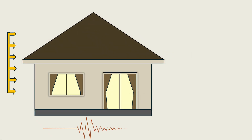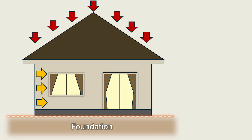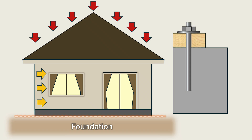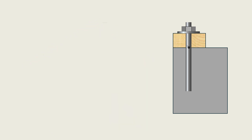When wind or seismic forces act on a wood-framed building, the building relies on a system of structural elements to safely channel those loads to the foundation while keeping the structure securely in place. As vertical and lateral loads move through the system, the final connection between the structure above and the foundation below is provided by anchor bolts. In wood-framed construction, anchor bolts at the sill plate play a critical role in ensuring structural stability by transferring loads from the building to its foundation.